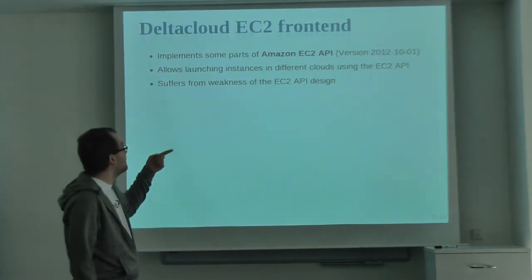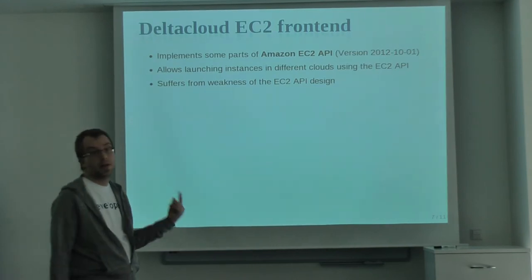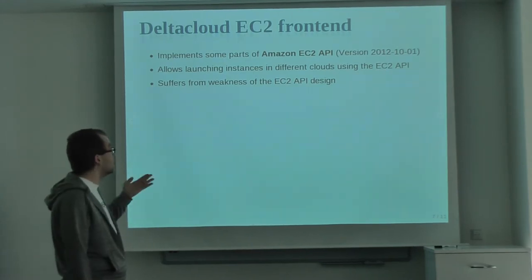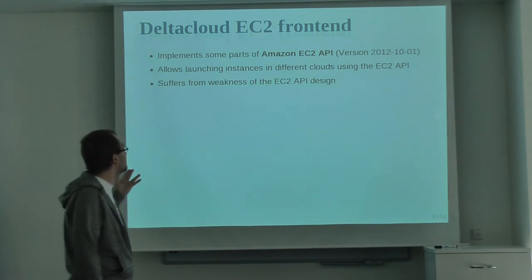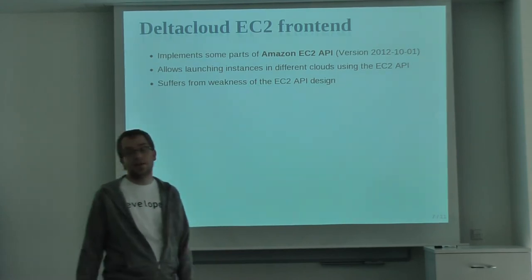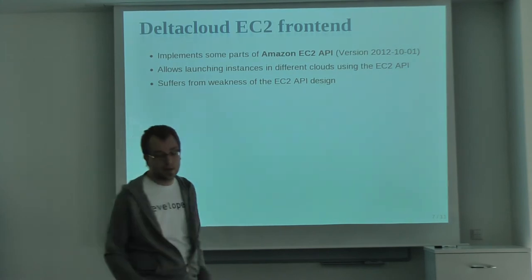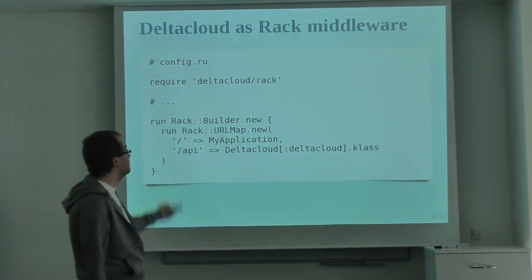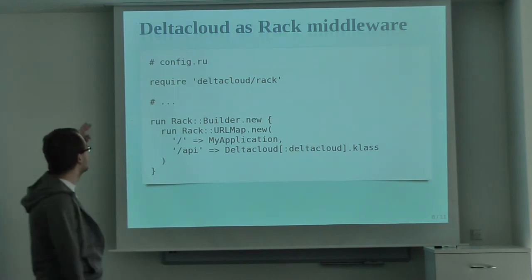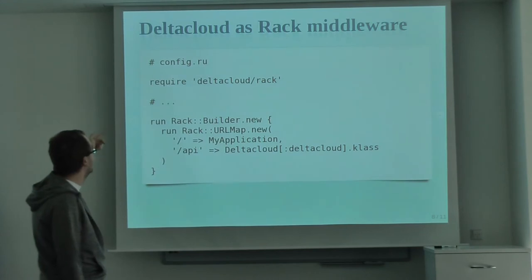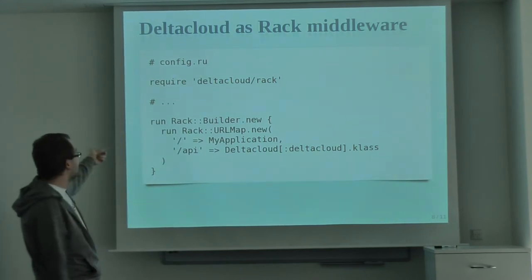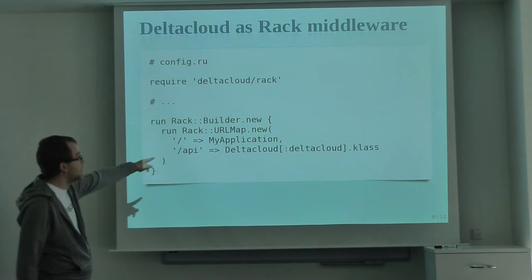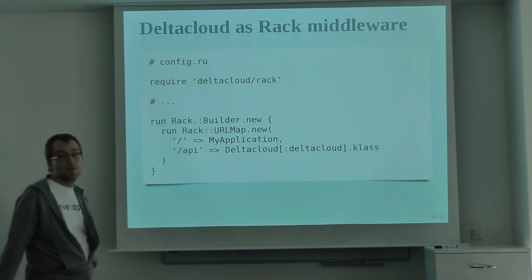With the EC2 frontend, we implement parts of the Amazon EC2 API — run instance, reboot instance, all instance actions, create new instance. It does suffer from EC2 API design weaknesses. Delta Cloud is now a Rack middleware — it's very easy to mount it in your application. In your config.ru, you just 'require deltacloud/rack', then use a Rack builder to map Delta Cloud on the '/api' URL. That's it — the Delta Cloud API will be available at that URL.